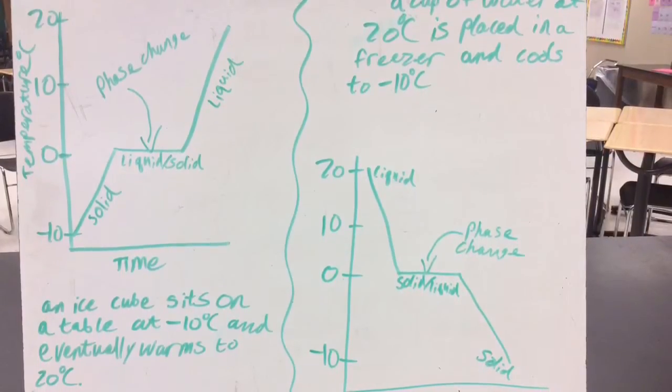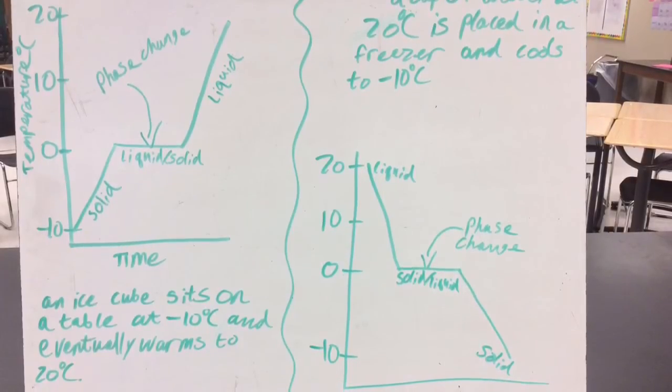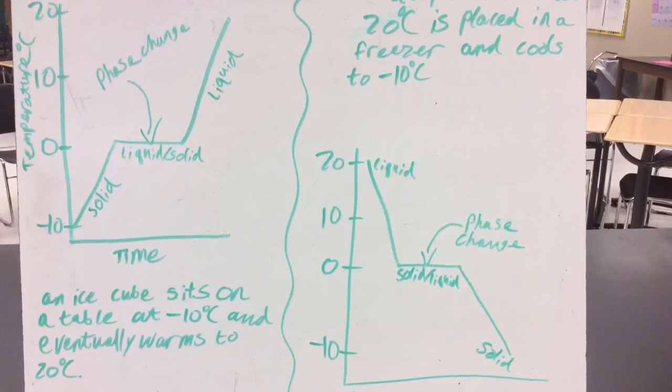On the right side we see a graph of a cup of water at 20 degrees Celsius that is placed in a freezer and cools to negative 10 degrees Celsius.